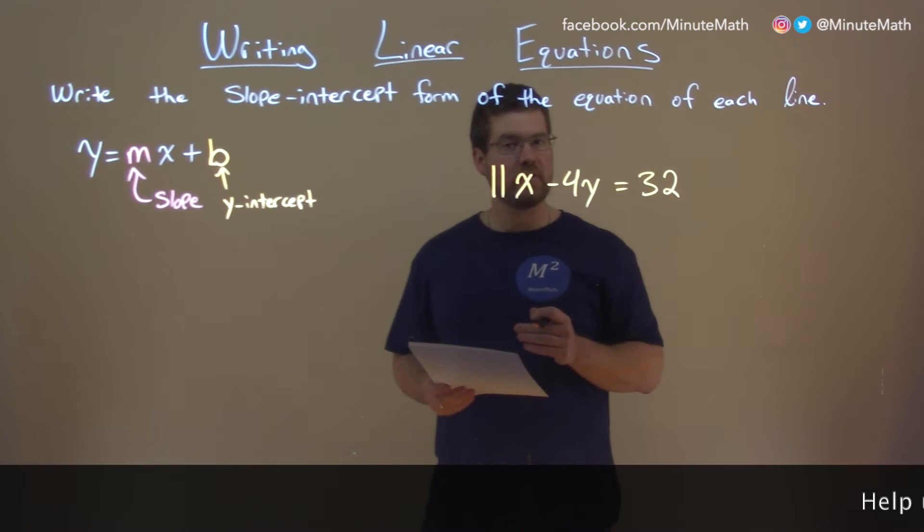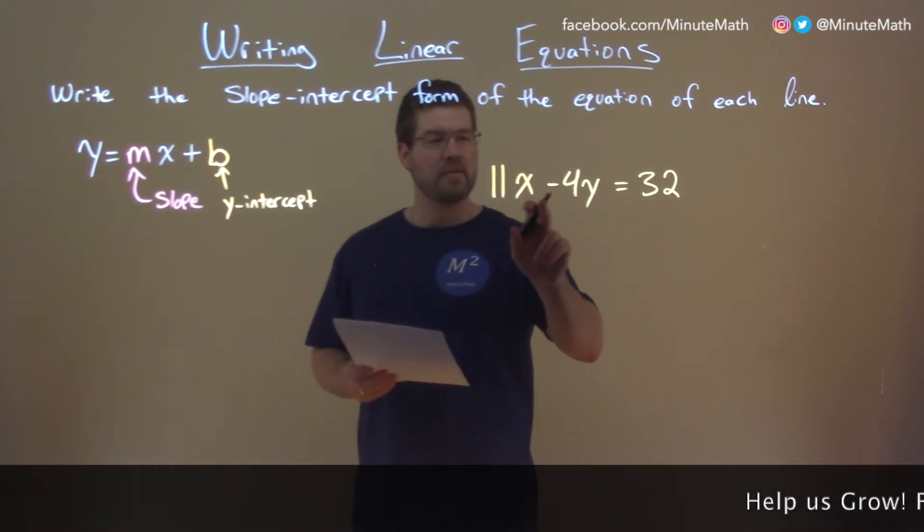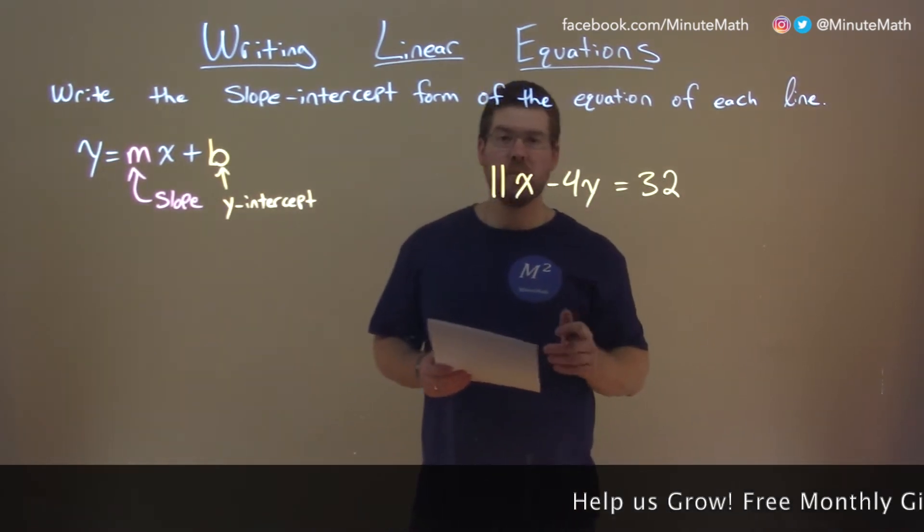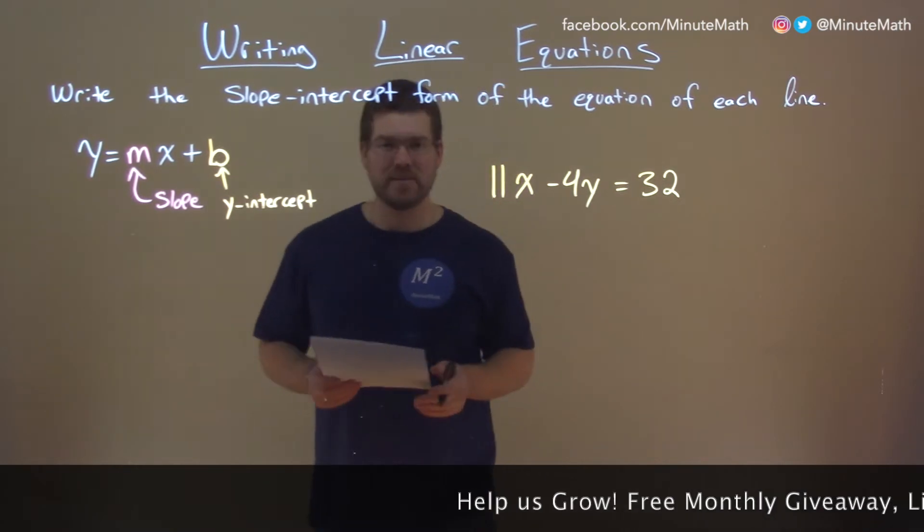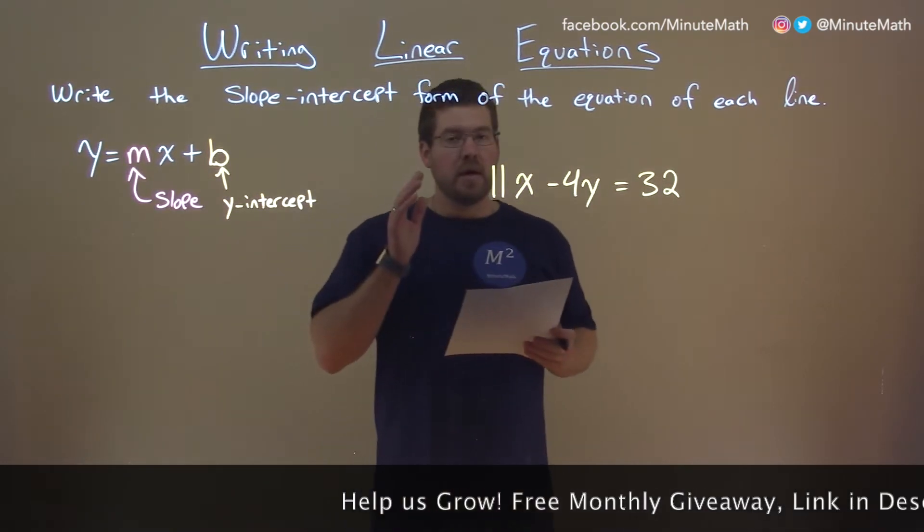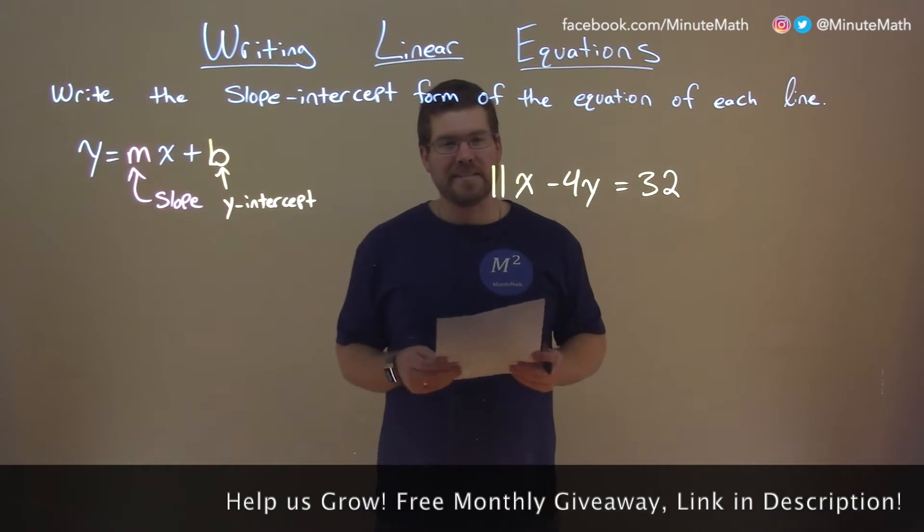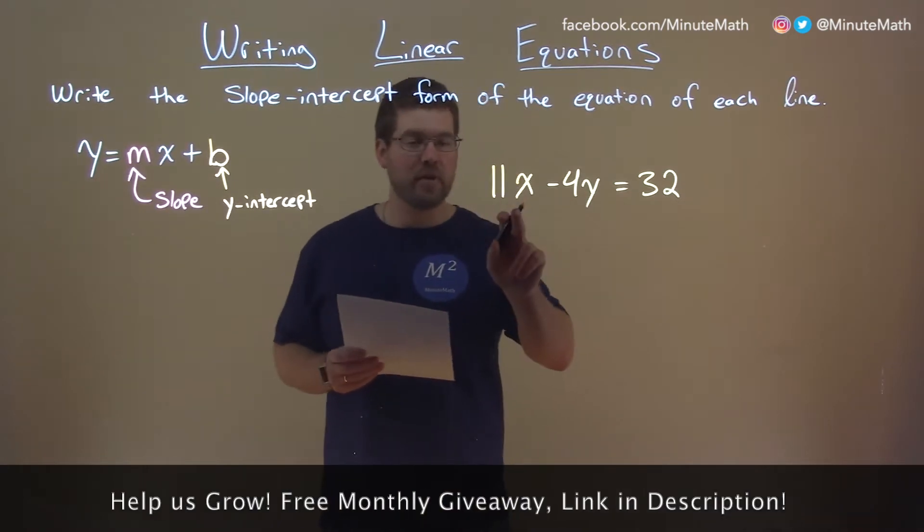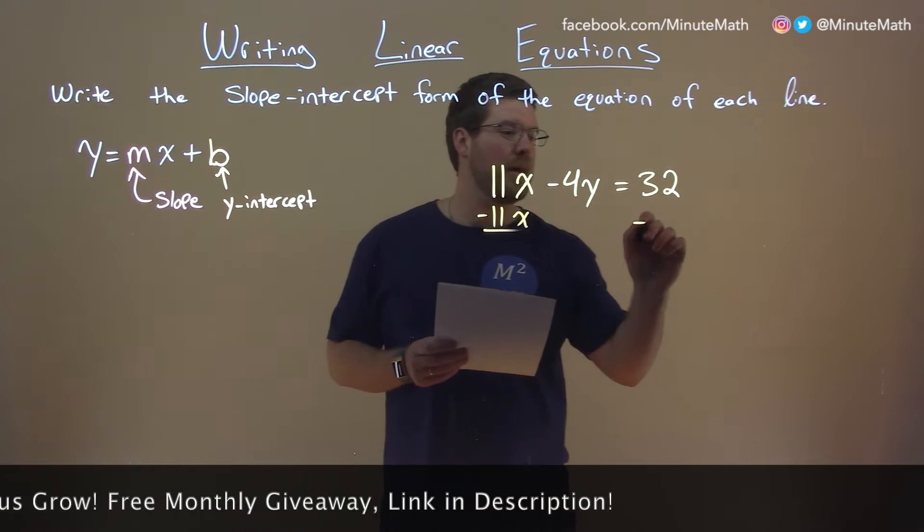So, if I was given this problem, 11x minus 4y equals 32, and we're writing that in slope-intercept form. Goal here, get y by itself. To do that, I need to first subtract 11x from both sides.